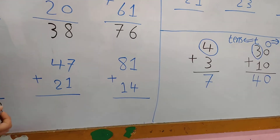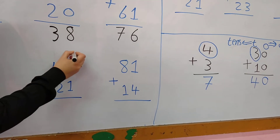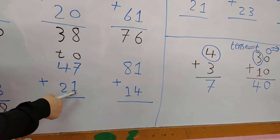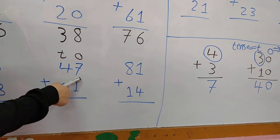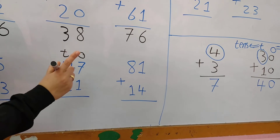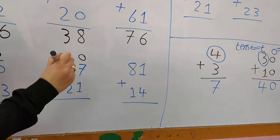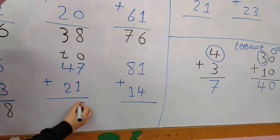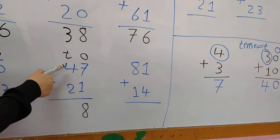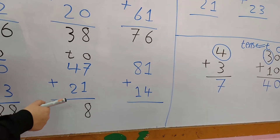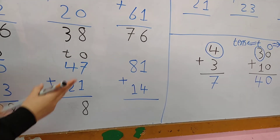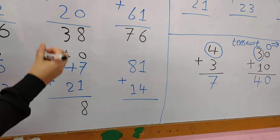47 plus 21. The first thing: write O and T. In the 1's column: 7 plus 1. I put 7 in my mind and 1 on my fingers and count after 7. After 7: 8. In the 10's column: 4 plus 2. I put 4 in my mind and 2 on my fingers and count after 4: 5, 6. So the answer is 68.